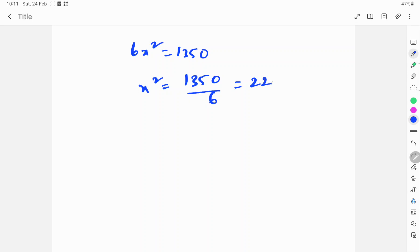1350 divided by 6 gives us 225. x square is equal to 225. So x is equal to root 225, which is equal to 15. x is equal to 15 meters.